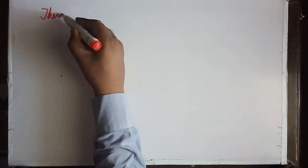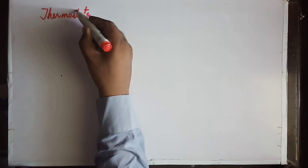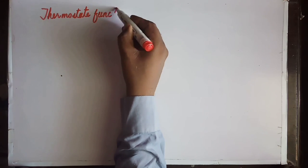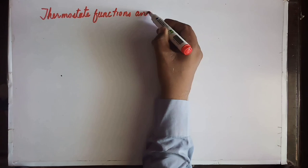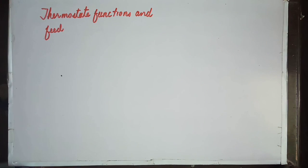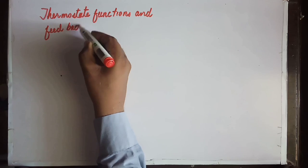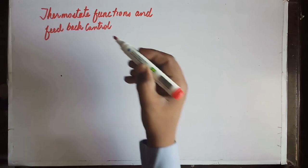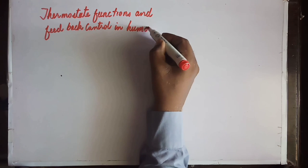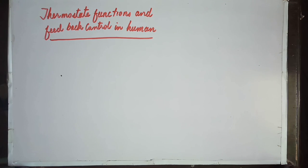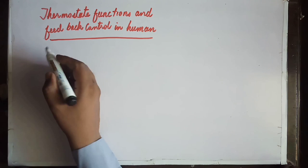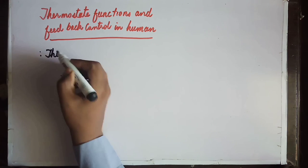Students, today we are going to discuss the topic of thermostat functions and feedback control — specifically feedback control in humans. Just as different electrical appliances have a thermostat for temperature control, similarly our body also has a thermostat, which is called the hypothalamus. We will now see how it works.